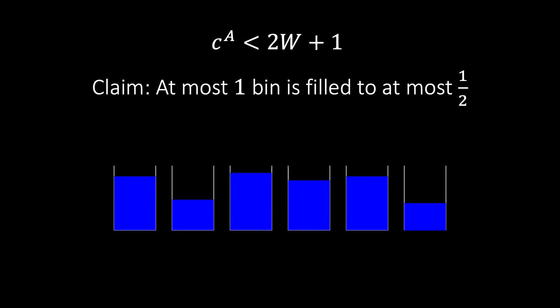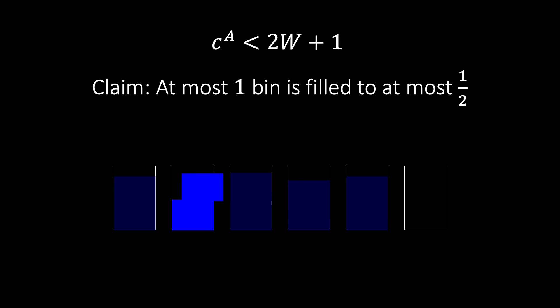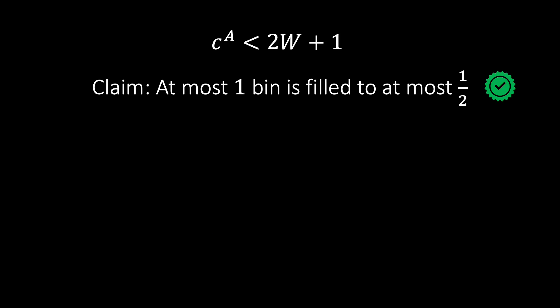Consider all the bins the algorithm uses. Let's assume there are 2 bins that are at most half full. In this case these 2 bins. Then our first fit algorithm would have fit all the items from bin 6 into bin 2. So this cannot be a packing produced by our first fit algorithm. We conclude that at most 1 bin can be at most half full.